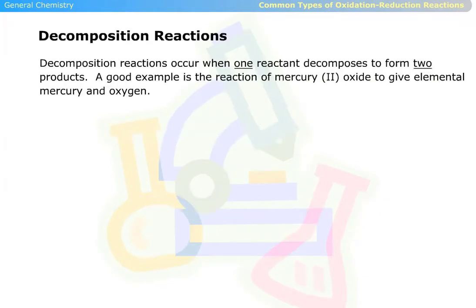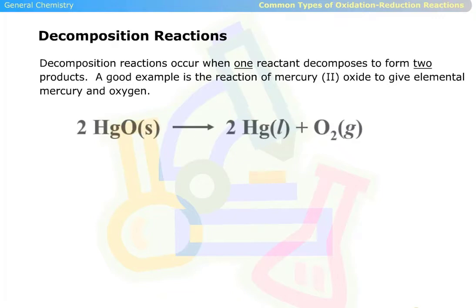Decomposition reactions occur when one reactant decomposes to form two products. A good example is the reaction of mercury oxide to give elemental mercury and oxygen. This reaction can be seen below.